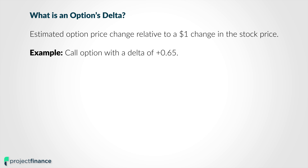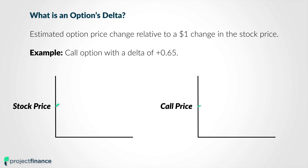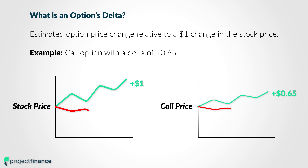There are multiple levels to learning about the option Greeks. The first level is learning the basic definitions, and in the case of delta, an option's delta is the estimated option price change relative to a $1 change in the stock price. So if we have a call option with a delta of 0.65, that means that if the stock price increases by $1, the option is expected to gain $0.65 in value, and if the stock price falls by $1, the option is expected to lose $0.65 of value. But this $0.65 delta call option is not going to remain a $0.65 delta call option as time passes — the delta, or the sensitivity of that option's price relative to changes in the underlying price, is actually going to change over time.